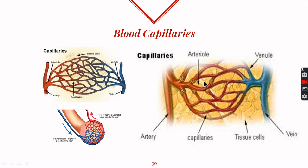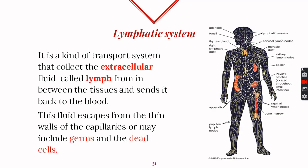These things can be larger molecules of proteins, water, or some waste. All these things escape and collect in these spaces because they are present outside the cells, so they are called extracellular fluid, which has been named as lymph. The lymph may also contain germs and dead cells along with the things that have escaped from the blood.